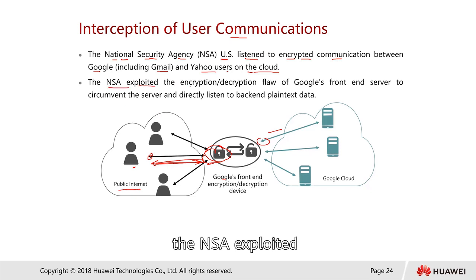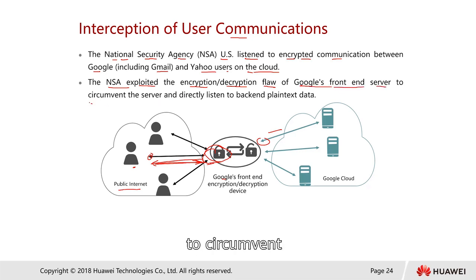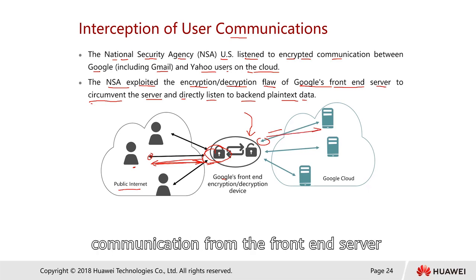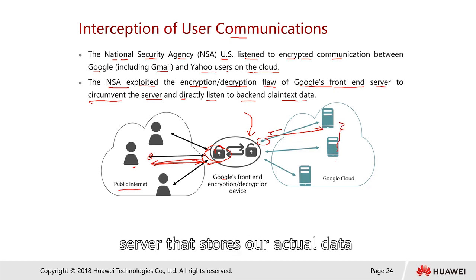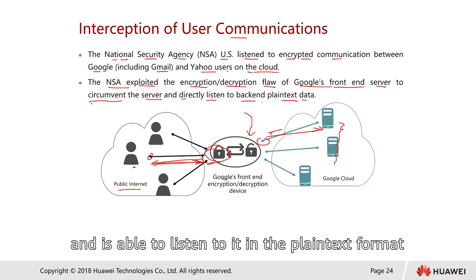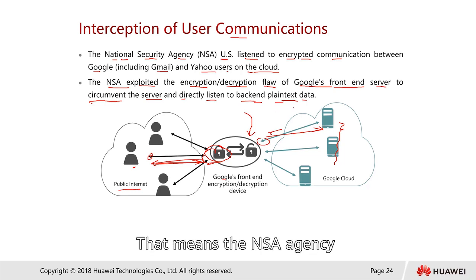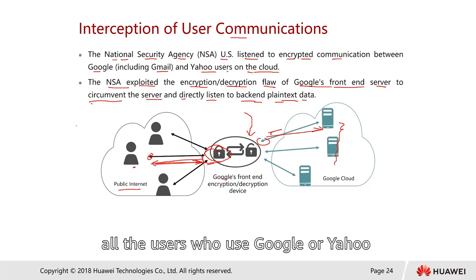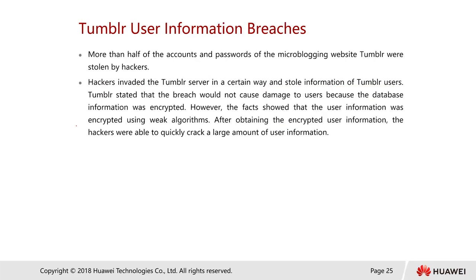The NSA exploited encryption/decryption flaws of the Google front-end server to circumvent it and directly listen to the back-end in plain text data. The NSA was able to intercept communication between Google's front-end server and the back-end server that stores user data, and listen to it in plain text format — meaning they could read all communication traffic of all Google or Yahoo users.